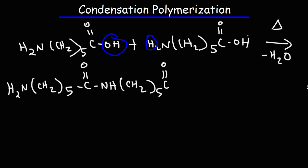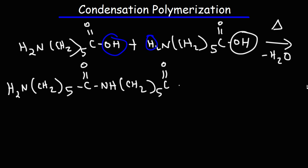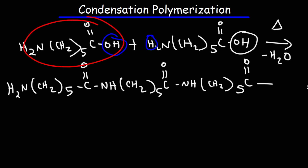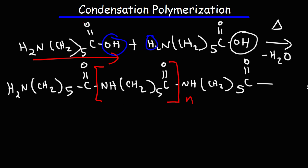We can react this part with another molecule, and this will be another NH, and the process will just repeat itself. Looking at the repeating unit: if we read the monomer from left to right, we can start with the nitrogen atom and end with the carbonyl group of the carboxylic acid — that is the repeating unit. This particular polyamide is known as Nylon 6, which I'm sure you've heard of before.